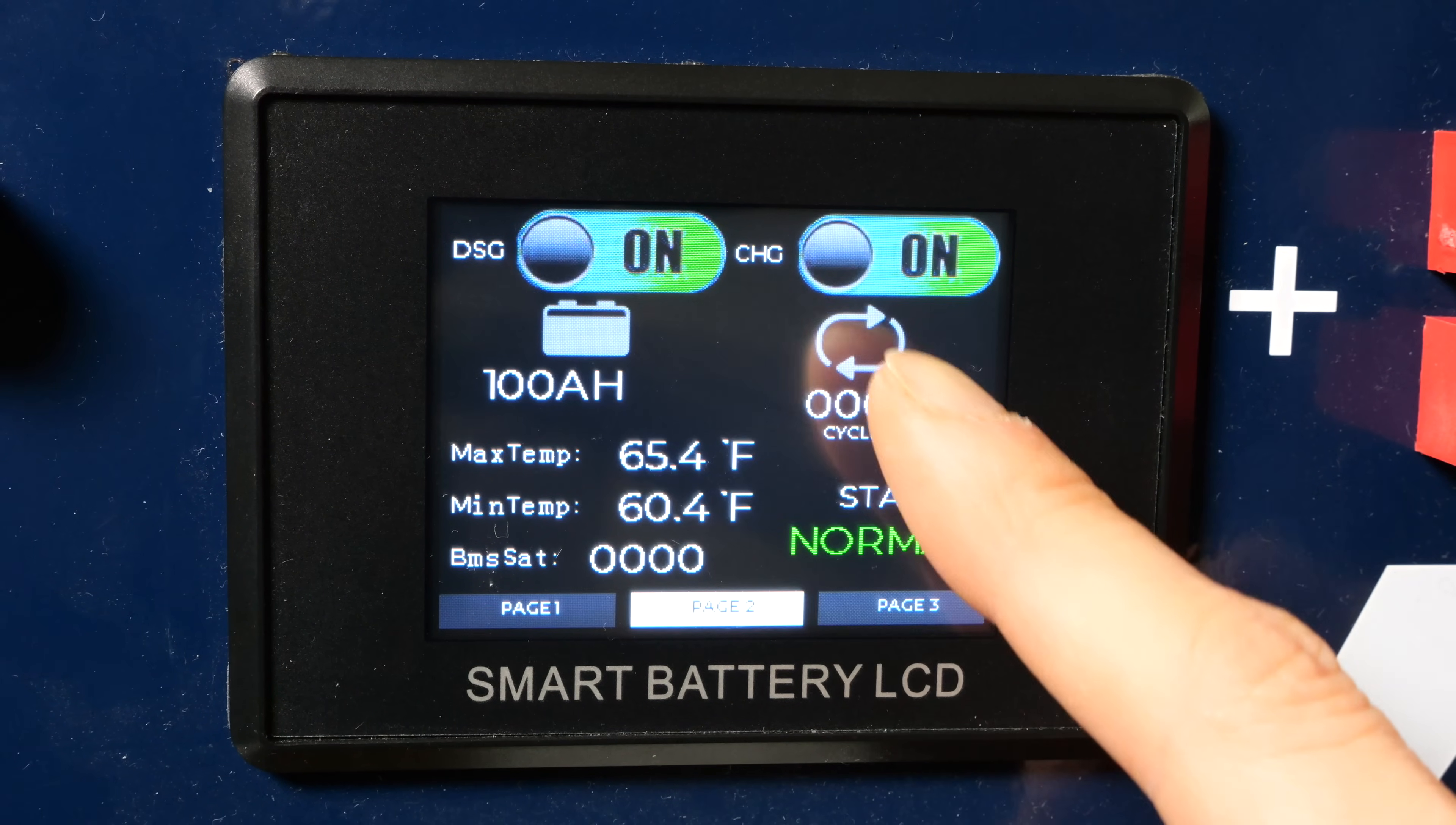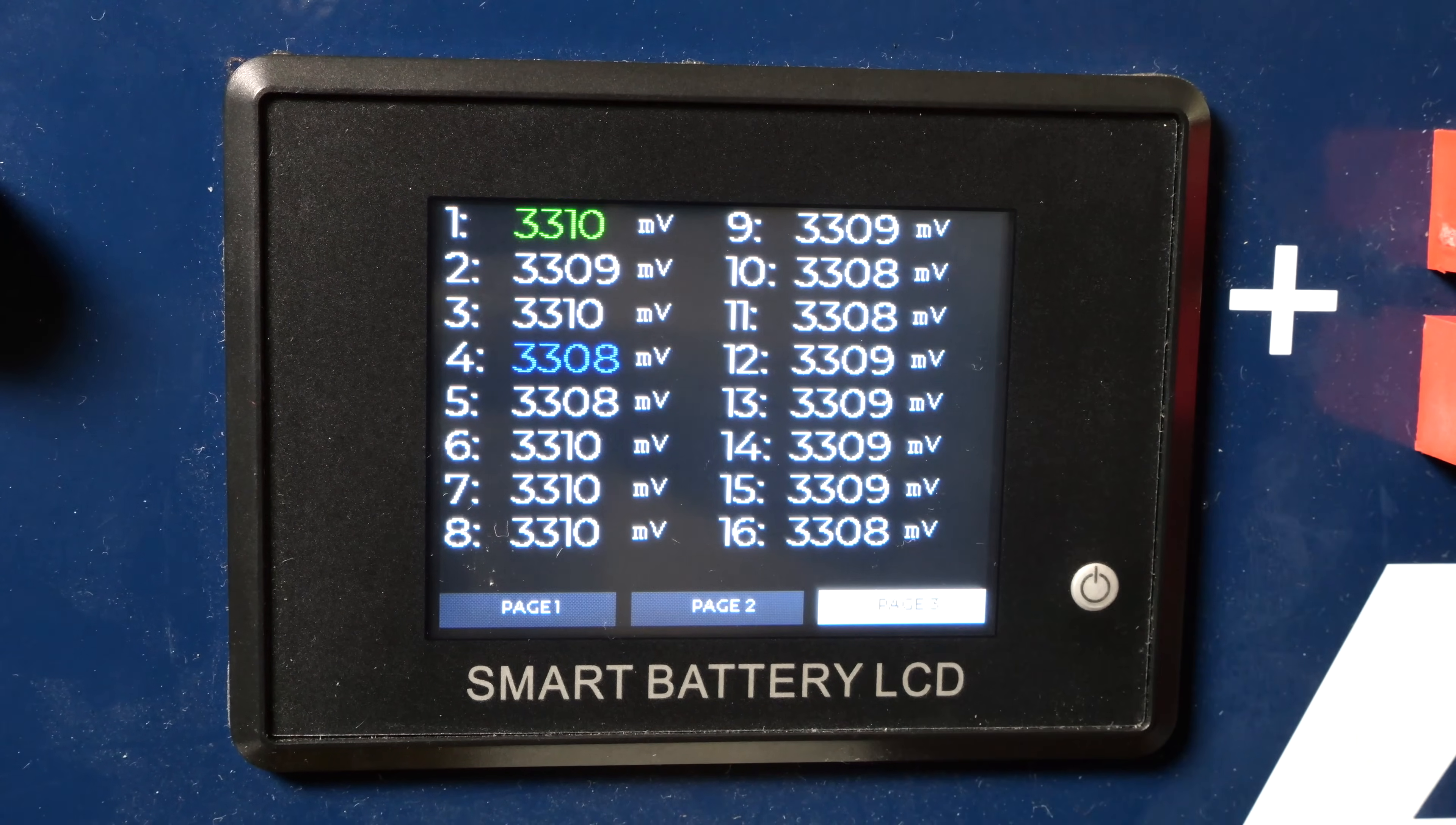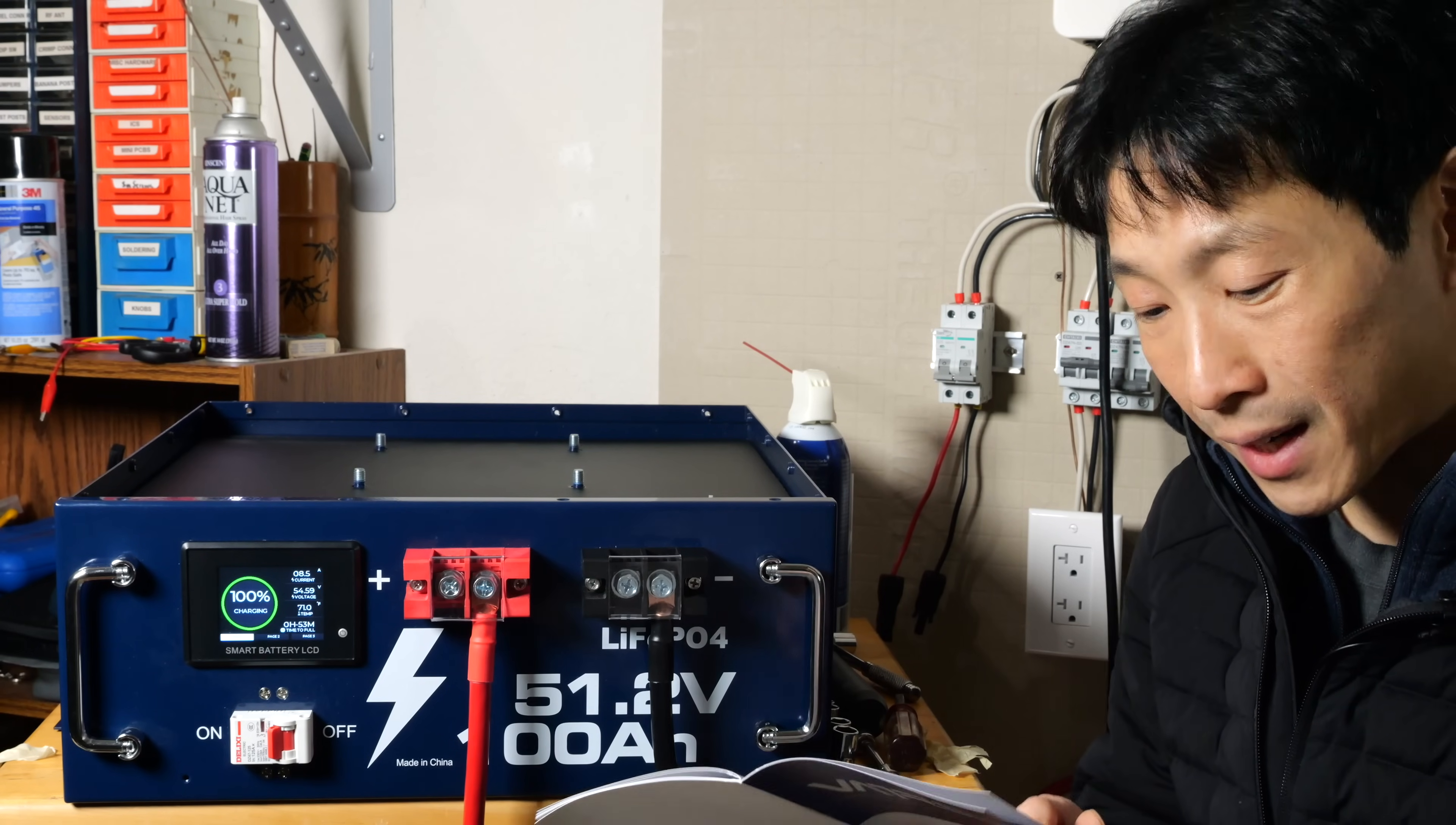You can enable or disable discharging. Enable or disable charging. Max temperature, min temperature, 100 amp hours. This whole battery went through one cycle so far. Page three tells you all the voltages of every single cell which is really great. Green highlighting the highest voltage cell. Blue highlighting the lowest voltage cell. The low temperature cutoff is different for charging versus discharging. Charging is zero degrees C and discharge is minus 20 C.